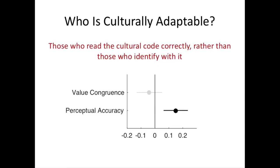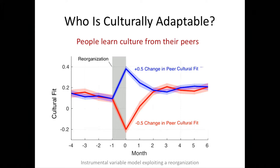You might ask: what distinguishes people who read the organizational cultural code better than others? One approach is that some people are just better at it due to psychological differences. However, we find no correlation between traditional ways of measuring personality and other psychological traits and one's ability to enact culture appropriately in the organization. What we do find is that it is highly dependent on the quality of one's peers.